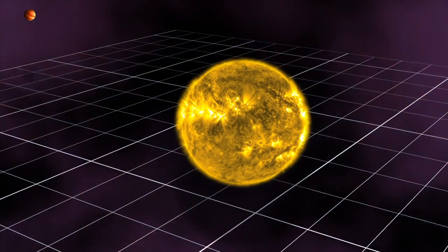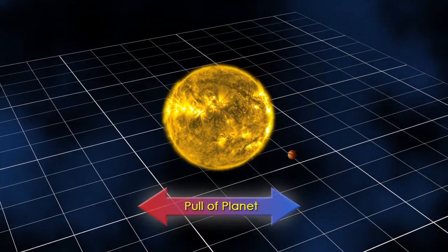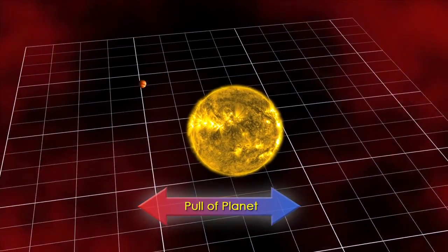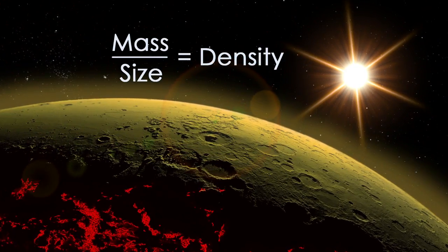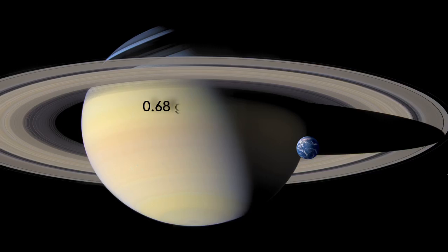By observing an exoplanet's gravitational pull on its star, astronomers can also determine the planet's mass and thus calculate its density to see if it is composed of rock, like Earth, or gas, like Saturn.